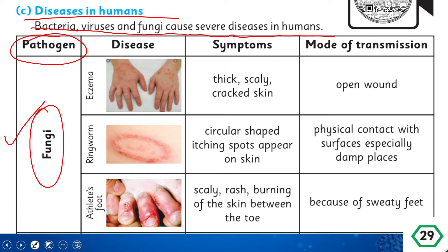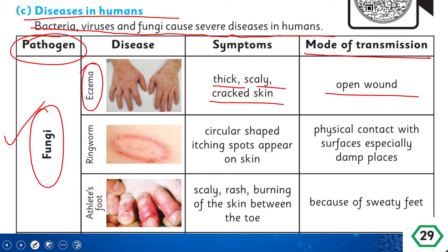The first disease caused by fungi is eczema — it is a skin disease. Small spots appear on your hands or any body part, they itch, and the symptoms are thick, scaly, cracked skin. The mode of transmission: if you have any open wound, fungi can enter there and cause eczema.